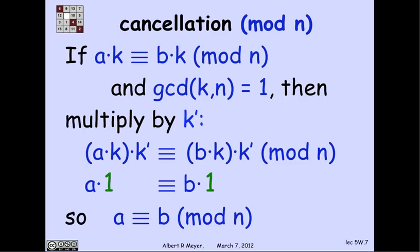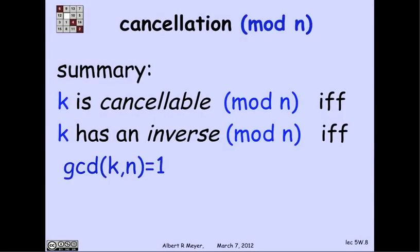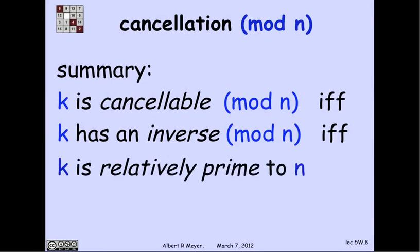And in fact, you can work out the converse implications. The punchline of this is, well, first of all, this is the cancellation rule. You can cancel providing that the GCD of k and n is 1, that k is relatively prime to n. So this is the summary. k is cancelable mod n if and only if k has an inverse mod n, if and only if the GCD of k and n is 1, which I can restate as k is relatively prime to n. And that's the story.